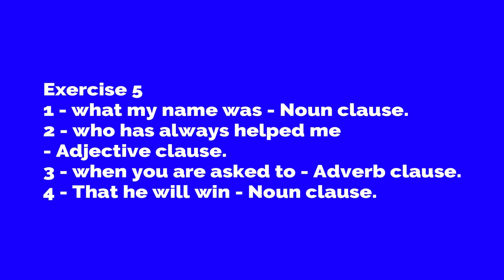In exercise five, underline the clause in the following sentences and state what kind of clauses they are. First: 'She asked me what my name was' — the clause is 'what my name was'; it is a noun clause. Second: 'He is a friend who has always helped me' — the clause is 'who has always helped me'; it is an adjective clause.